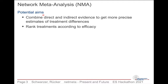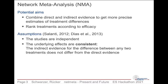This is the first aim typically of a network meta-analysis. A second aim is often that we would like to rank treatments according to their efficacy. The assumptions we have to make are that studies are independent of each other and that the underlying effects are consistent — meaning that for any two treatments, the treatment difference between direct and indirect evidence does not differ substantially.